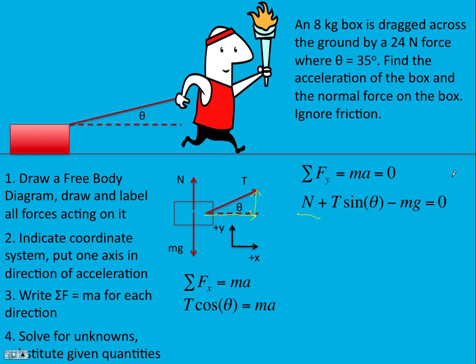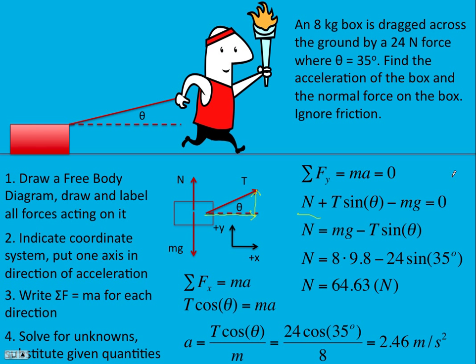Now we've got our equations. The physics is done, the rest is just algebra. We solve for the unknowns and substitute given quantities. In the x direction, solve for the acceleration: T cos(θ) over the mass, and that comes out to be 2.46 meters per second squared. In the y direction, solve for the normal force: it's the weight minus T sin(θ). So you can see the normal force is not going to equal the weight. If the box was on a scale, the scale would read less than the weight while you're pulling up on that string. The normal force comes out to 64.63 Newtons.